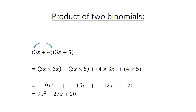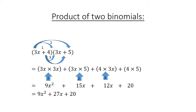Product of 2 binomials using FOIL. First, multiply the first term in the first bracket with the first term in the second bracket: 3x times 3x. Then multiply the first term in the first bracket with the last term in the second bracket: 3x times 5. Then multiply the last term in the first bracket with the first term in the second bracket: 4 times 3x. Finally, multiply the last term in the first bracket with the last term in the second bracket: 4 times 5. Simplifying: 9x squared plus 15x plus 12x plus 20. Collecting like terms: 9x squared plus 27x plus 20.